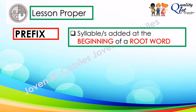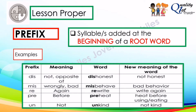Prefix — this is a syllable or these are syllables added at the beginning of a root word. Now let's have the examples. The prefix 'dis-' means 'not' or 'opposite of.' If you have the root word 'honest' and you add the prefix 'dis-,' this becomes 'dishonest.' The prefix 'mis-' means 'wrongly' or 'badly.' If you have the root word 'behave' and you add the prefix 'mis-,' this will become 'misbehave,' meaning behaving badly.